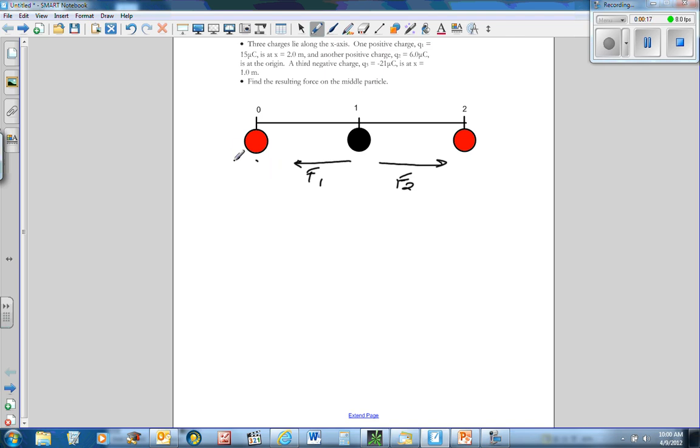Basically we have a 15 microcoulomb charge positive here, so that's 15 times 10 to the negative 6 coulombs. And we have a 6 at the origin, 6 microcoulombs, that's 6 times 10 to the negative 6 coulombs here. In the middle at 1 meter, we have negative 21 times 10 to the negative 6 coulombs.